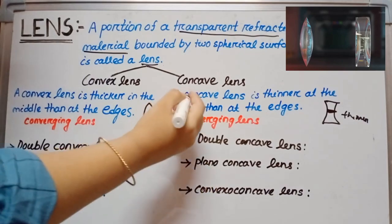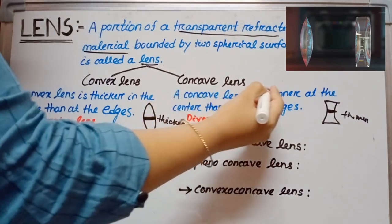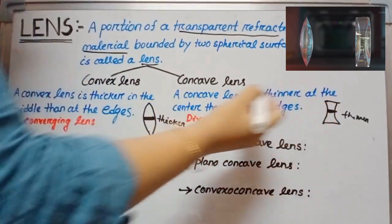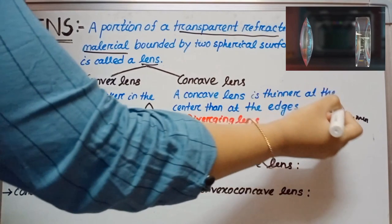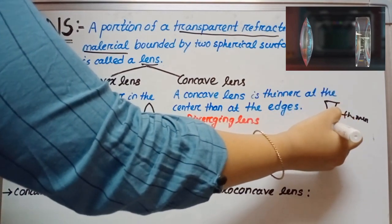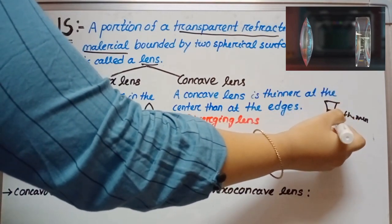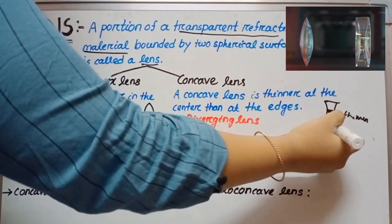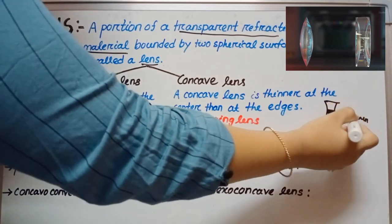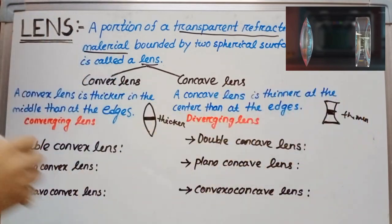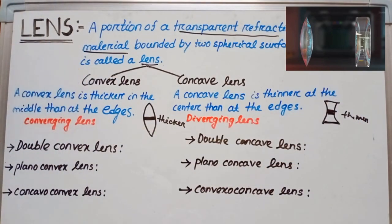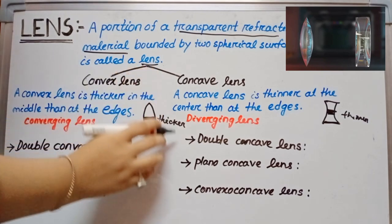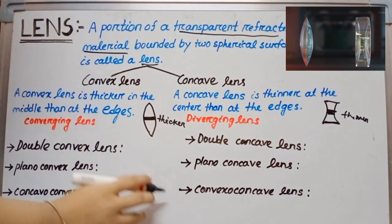The concave lens is thinner at the center than at the ends — that means, compared to the ends, the center is thinner. Now, a convex lens is of three types, and also a concave lens is of three types.